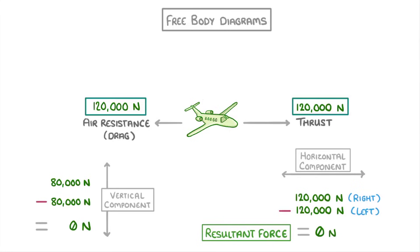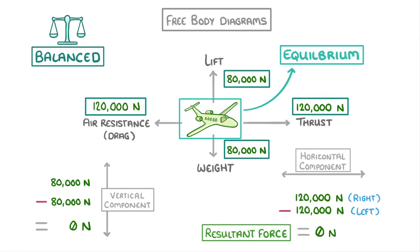Now both the horizontal and vertical components would be perfectly balanced, and so we would say that the object is in equilibrium, because there's no resultant force acting on it.